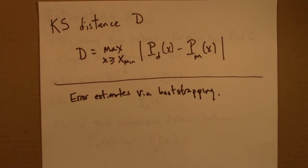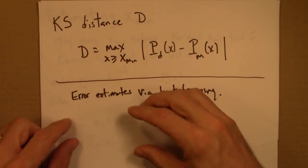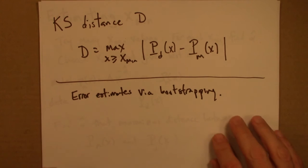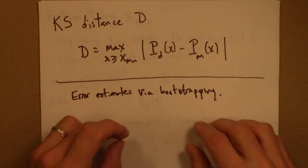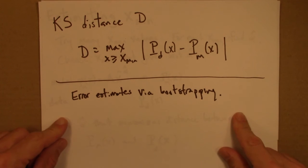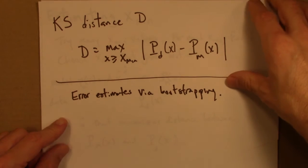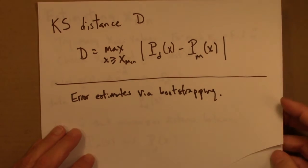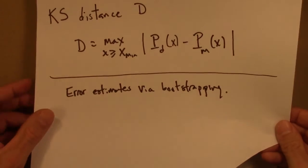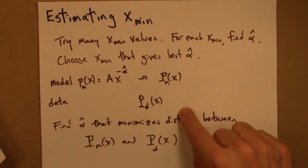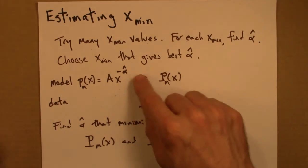Then it turns out the easiest thing to do is to bootstrap. So we can get error estimates via bootstrapping. And so, very briefly, that would work as follows. You'll have your original data set, x1 up to xn. You would create a synthetic data set from that by resampling with replacement. And then with that synthetic bootstrap data set, you would do this same procedure and estimate an xmin.